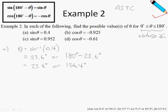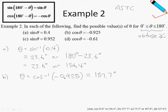For part B, cosine theta equals negative 0.925. To get theta, take cosine inverse of the value. Pressing this in the calculator and rounding to one decimal place gives 157.7 degrees. For cosine, there is only one answer in this range, so we are done.